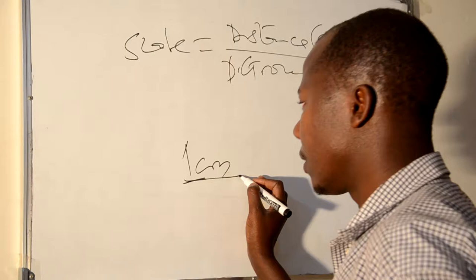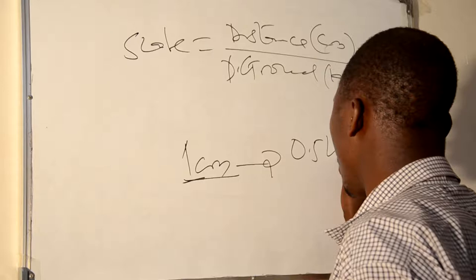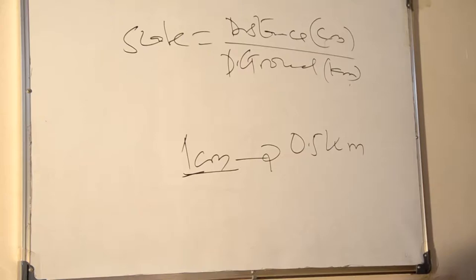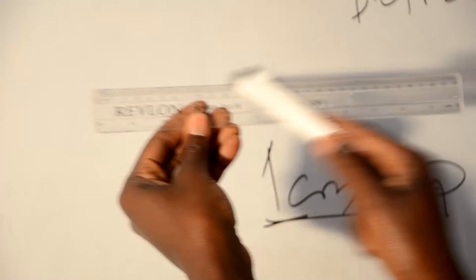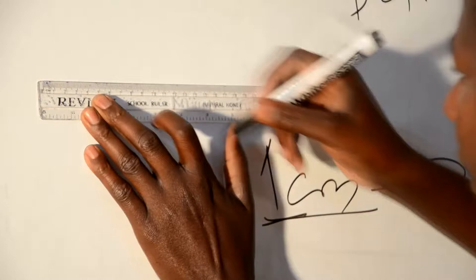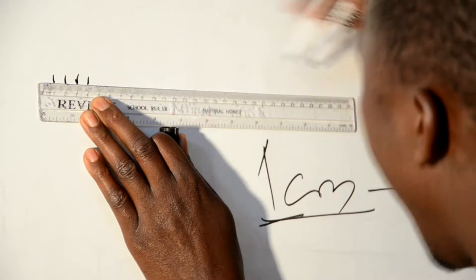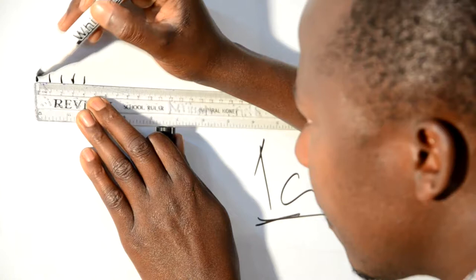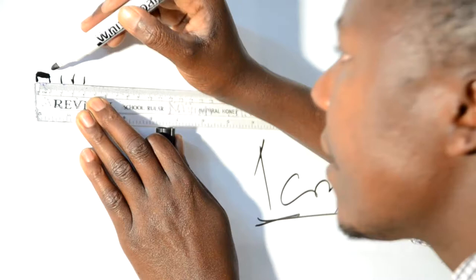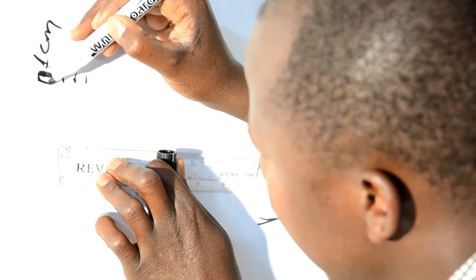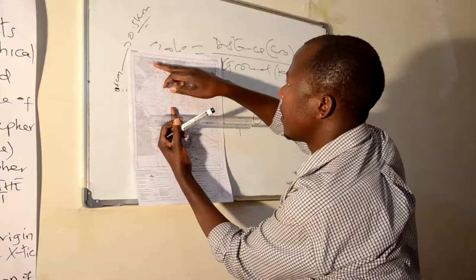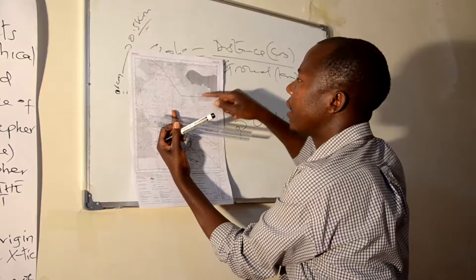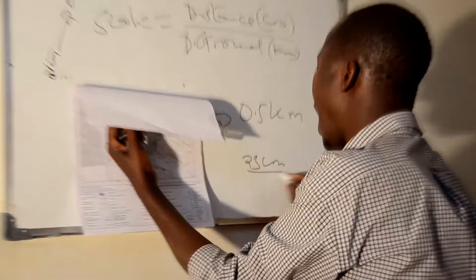Dear students, this is the ruler. This ruler has 30 cm — from 0 up to 30 cm. For instance, this is 1, 2, 3, 4, up to 30. Therefore, this distance from the map is 1 cm, and this distance is representing 0.5 km on the ground. For example, if this road from here up to this area we calculate and obtain maybe 23 cm, we have to divide by 2, and we will obtain 11.5 km.